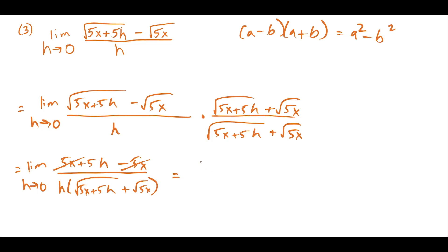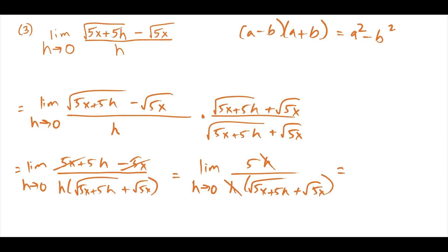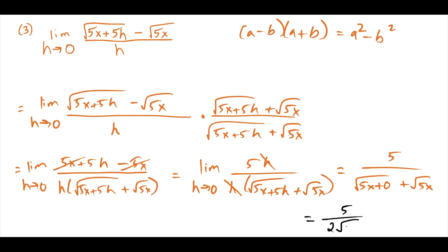On top, 5x minus 5x cancels, leaving 5h. The denominator is h times (square root of 5x plus 5h plus square root of 5x). The h over h simplifies, and we plug in h equals 0 only — not the other variables. We get 5 over (square root of 5x plus 0 plus square root of 5x), which simplifies to 5 over 2 times square root of 5x. That's our answer to the third question.